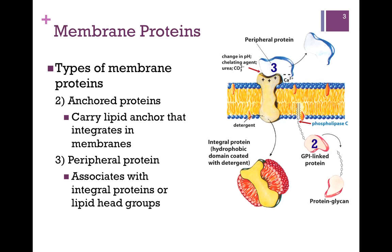The second type of membrane protein is called an anchored protein, indicated by the number two here. It carries a lipid molecule as an anchor — that is, it's connected to the protein, and that integrates within the membrane.